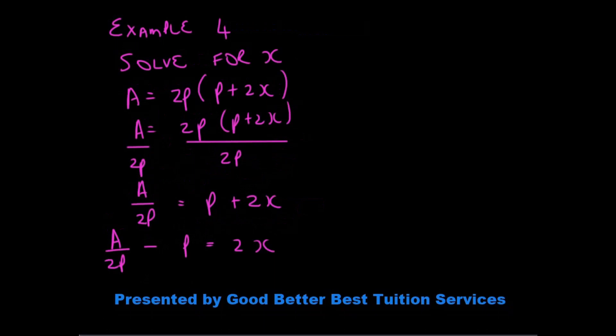Let's look at example four. So here we have A is equal to 2p and in brackets p plus 2x. The first step would be for us to divide by 2p on both sides so that we can start our process of isolating the x.